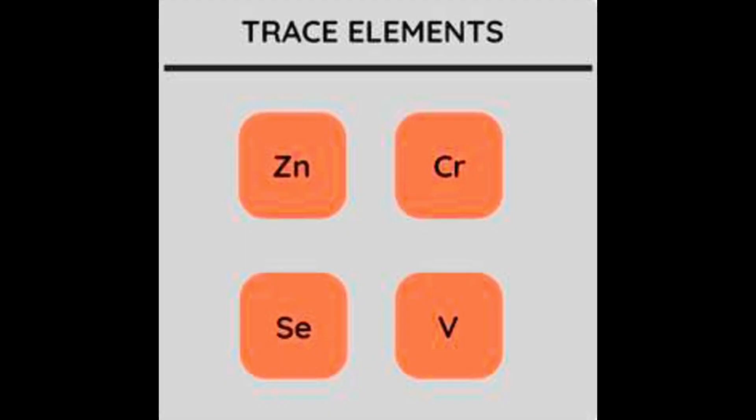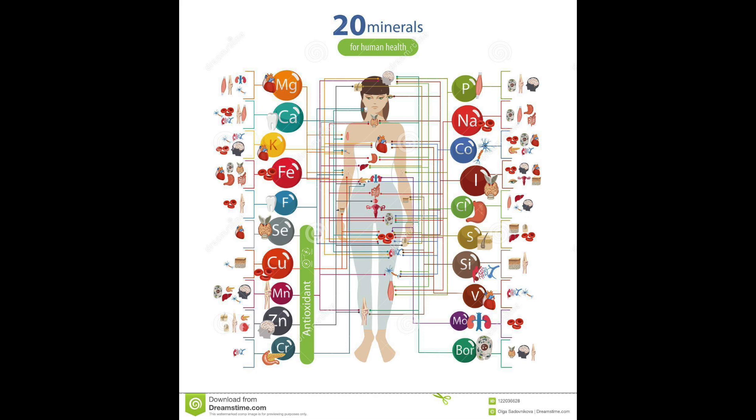What is a trace element? A trace element is one that makes up less than 0.1% of the total body mass. They can be obtained only from the environment and cannot be synthesized in the body. They may be metallic or non-metallic. The metallic trace elements can be further subdivided into essential and non-essential. The non-essential are not always present in the body.